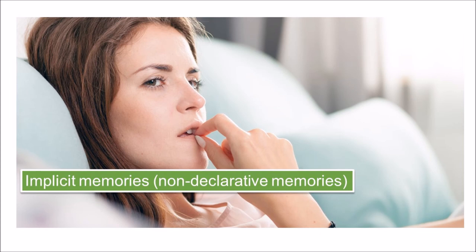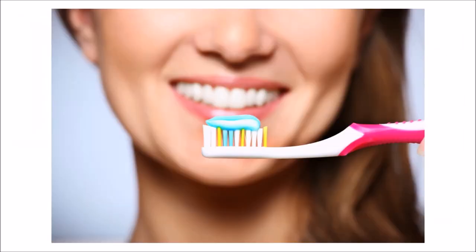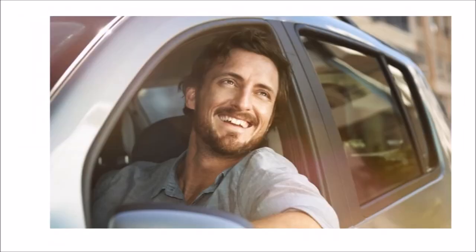Procedural memory is a type of implicit memory. It stores information about how to do things — it is the memory for skilled actions, such as how to brush your teeth, how to drive a car, how to swim the crawl freestyle stroke. If you are learning how to swim freestyle, you practice the stroke: how to move your arms, how to turn your head to alternate breathing from side to side, and how to kick your legs. You would practice this many times until you become good at it.